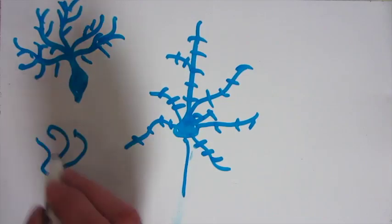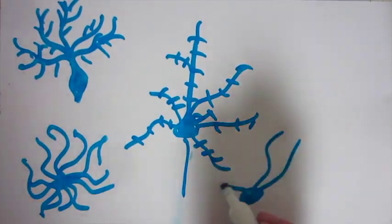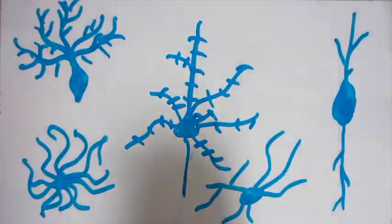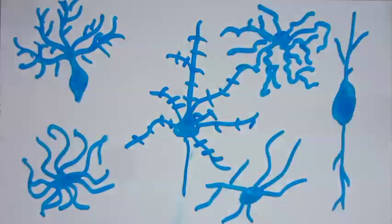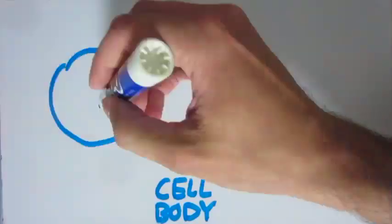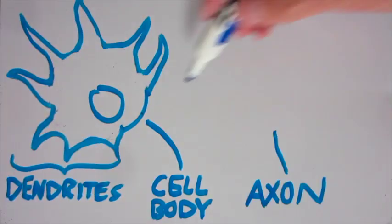Neurons are cells with special electrical properties, and they're responsible for all the moving, feeling, and thinking you do. They come in many shapes and sizes, but in general they've got a main body, a bunch of dendrites, and one axon.